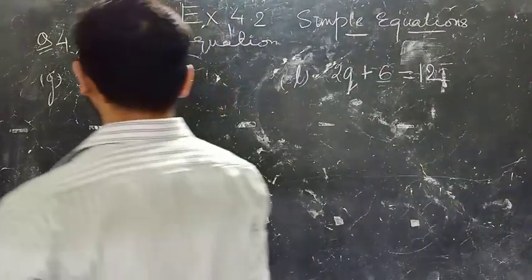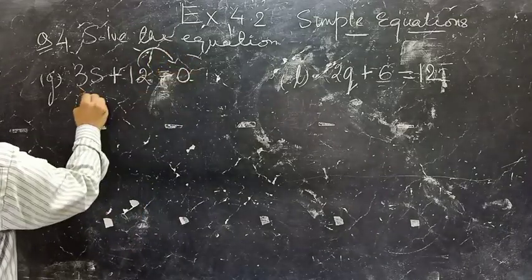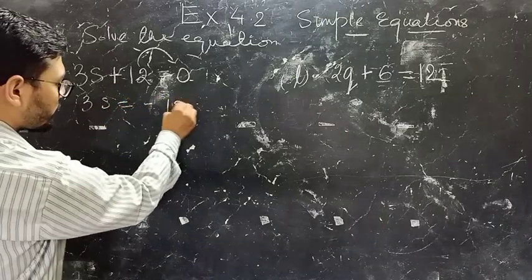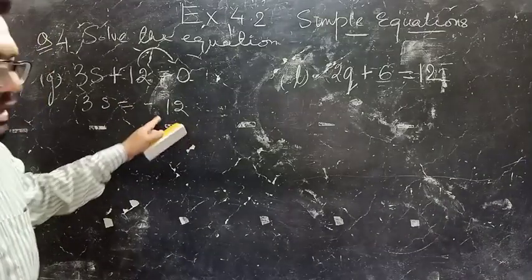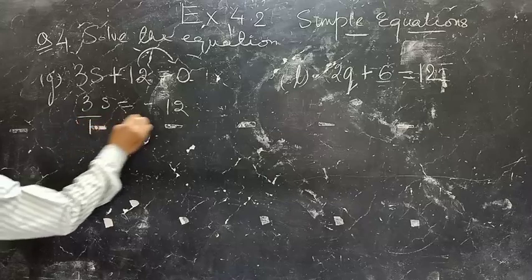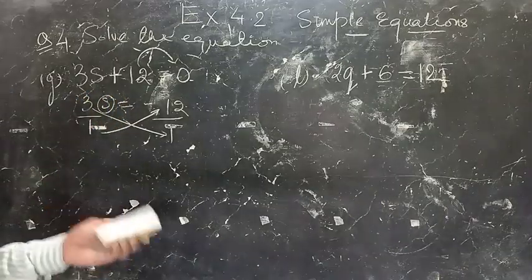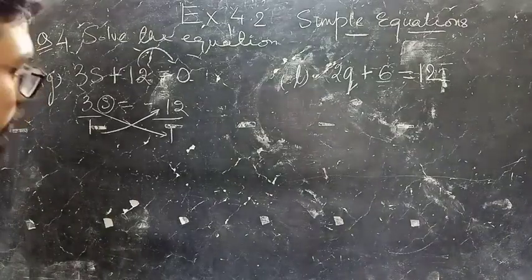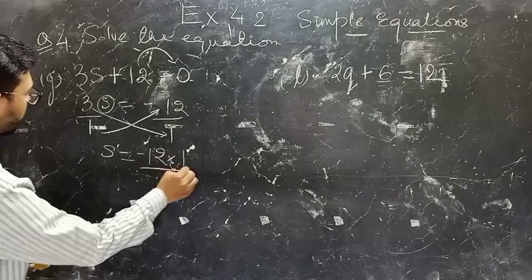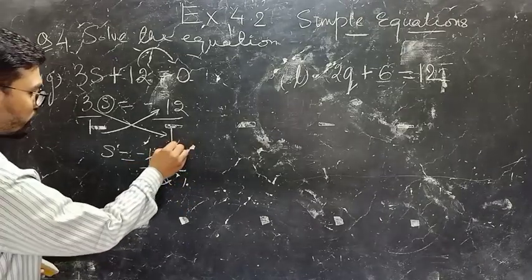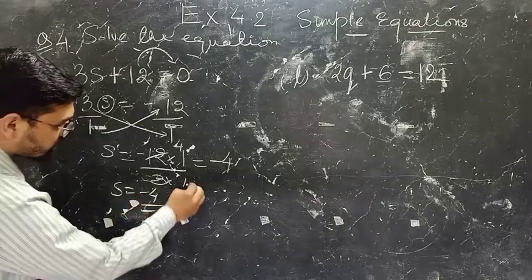Part D: 3s plus 12 equals 0. First take this 12 to the RHS. In the LHS it is plus 12, in the RHS it becomes minus 12 — sign gets changed. Now cross multiply the values to make the variable alone. S equals minus 12 into 1 divided by 3 into 1. 3 fours are 12, so S equals minus 4. This is your answer.